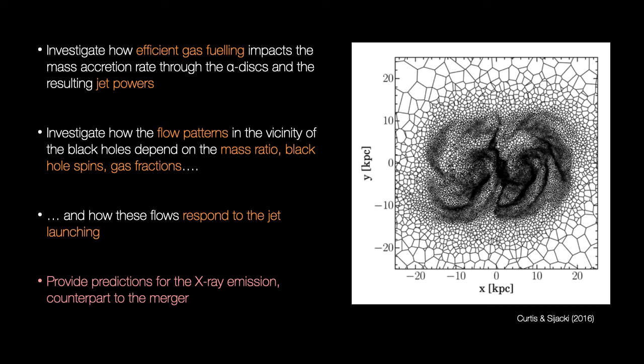We'll also look at how efficient gas fueling impacts the mass accretion rate through the alpha disks and the resulting jet powers. As well as this, we'll investigate how the flow patterns in the vicinity of the black holes depend on the mass ratio, black hole spins, gas fractions, and how these change as a result of jet launching.